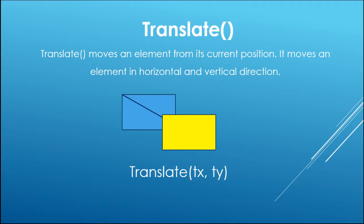The Translate method accepts 2 values. Tx is for the x-axis and Ty is for the y-axis. Tx moves an element in the horizontal direction. Ty moves an element in the vertical direction. Ty is an optional value.